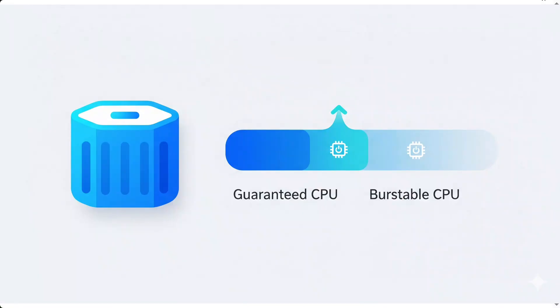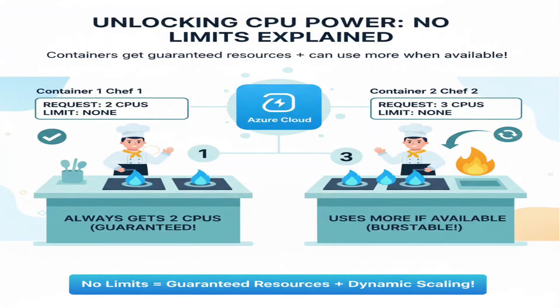Here's the step-by-step reasoning. When you remove resource limits, containers can still get their requested resources — their guaranteed minimum — but they can also use additional CPU resources when available. Container 1 requested two CPUs, so it will always get those two CPUs, protecting it from being negatively affected. Container 2 requested three CPUs, so it gets those guaranteed, but without limits it can use even more when the system has spare capacity.